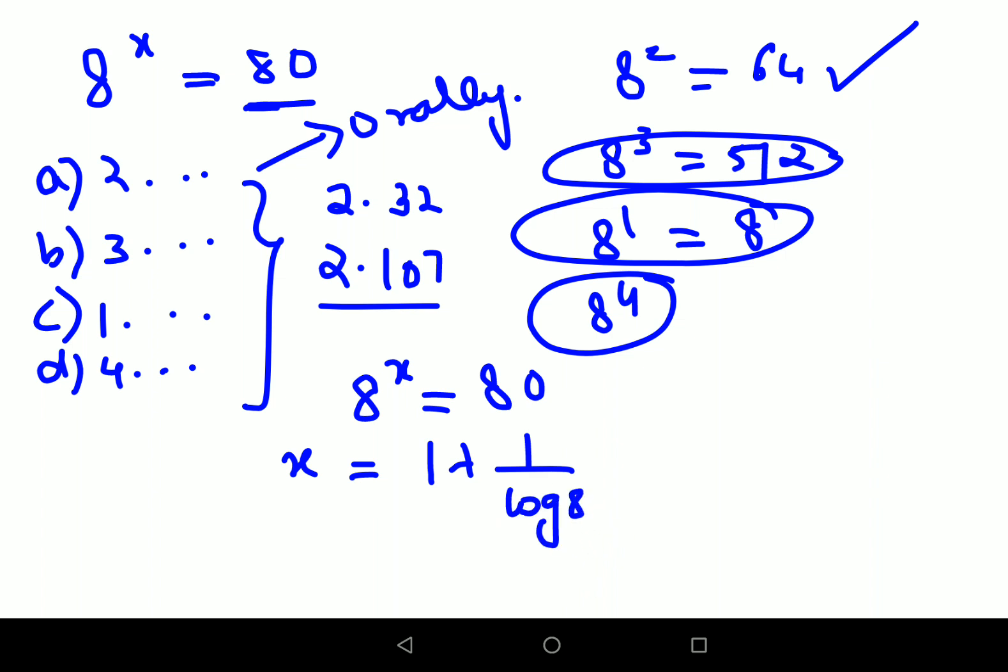Now please understand this can be written as 1 plus log 8 raised to minus 1. Why like that? See, 1 upon a can be written as A raised to minus 1. So that is the entire logic which you could have done in this case.